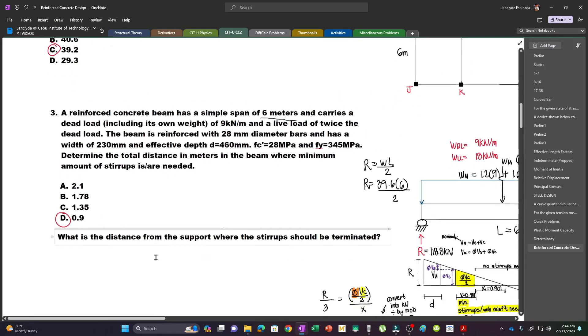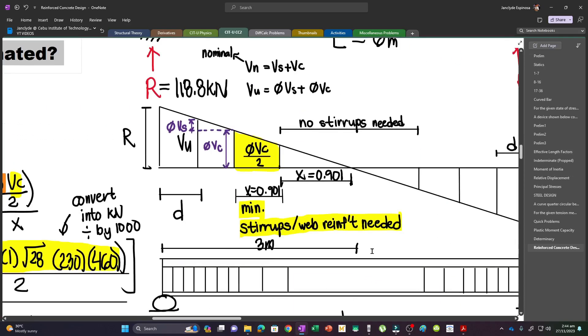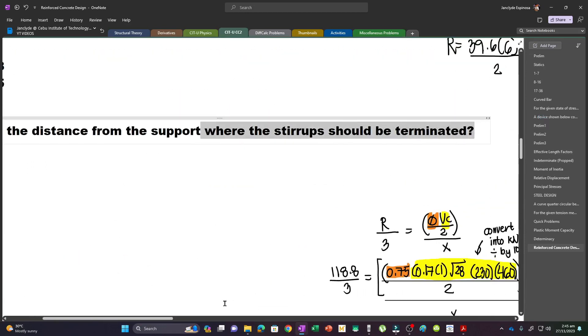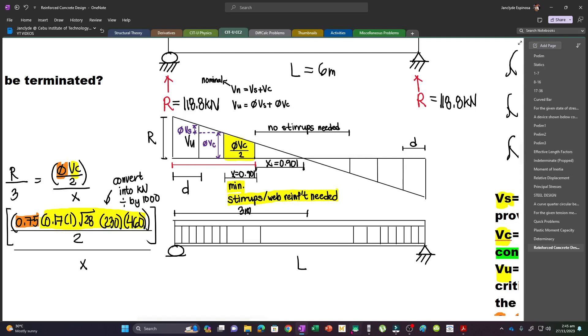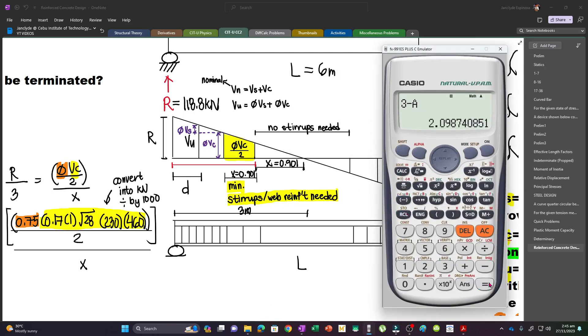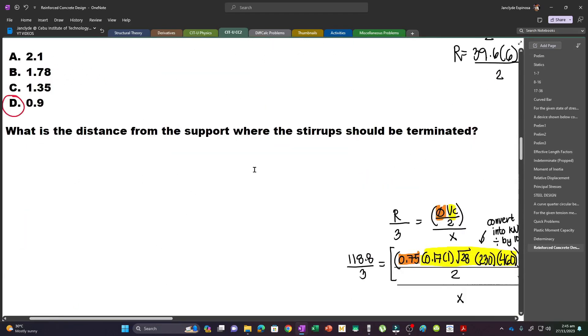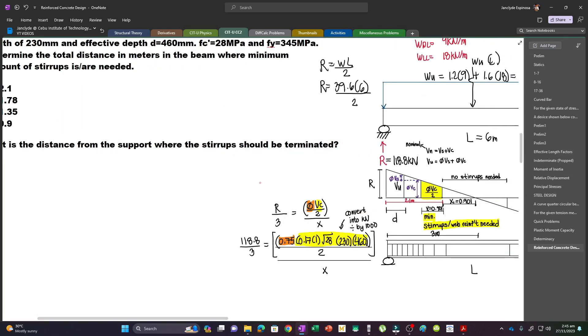This is a bonus question because these values might appear in the choices. What is the distance from the support where the stirrups should be terminated? To get that, we calculate the distance from the face of the support to here, because after this point no stirrups are needed. So this is where the stirrups should be terminated. That's simply 3, this distance, minus 0.9, which equals 2.1. This has been rounded off, so 2.1 meters is our answer if that's the question.